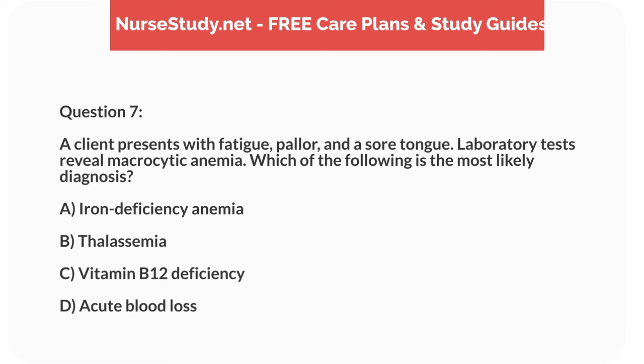Question 7. A client presents with fatigue, pallor, and a sore tongue. Laboratory tests reveal macrocytic anemia. Which of the following is the most likely diagnosis? A. Iron deficiency anemia. B. Thalassemia. C. Vitamin B12 deficiency. D. Acute blood loss.